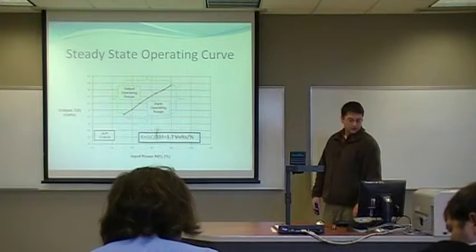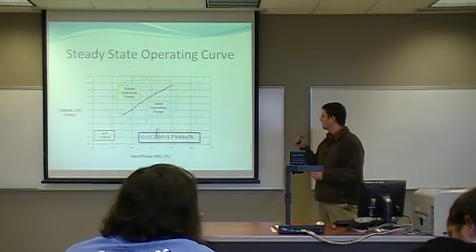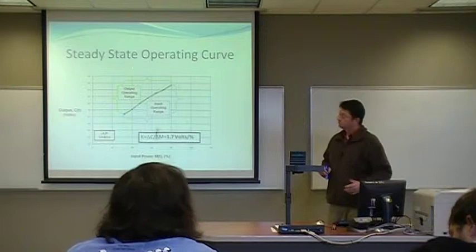Just to bring you back up to speed on where we were before, here's our steady-state operating curve. Our team, the goal team, is going to operate between input 70 and 95%, which corresponds to around 72 to 95 volts in the output range.